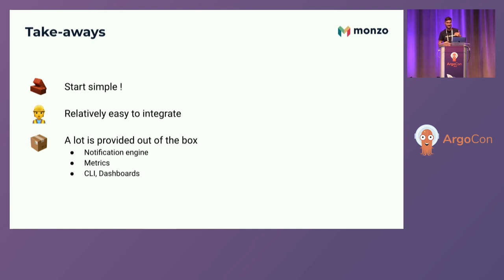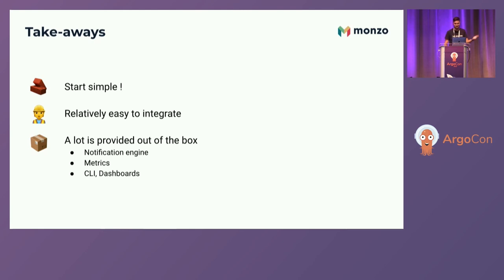The takeaway: if you're planning to move your entire organization to something more complex, do it in steps. Start as simple as possible. You don't need to go from a simple process to something state-of-the-art with a very complex strategy. Start with what actually matters for your org — in our case that was automated rollbacks. Argo is relatively easy to integrate even with custom tooling because it provides a lot out of the box: notification engine, metrics, and a useful CLI and dashboard.